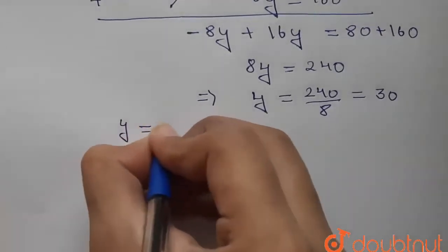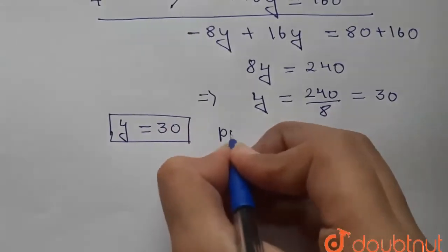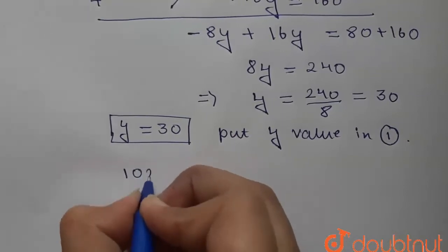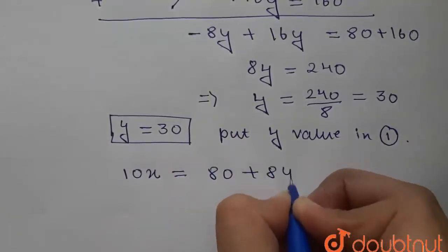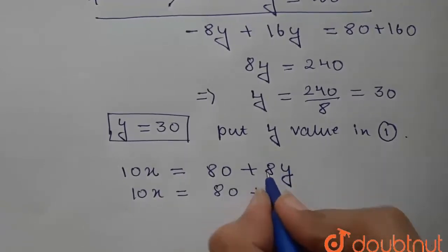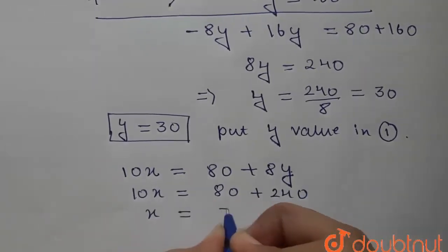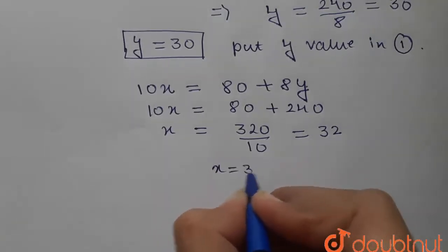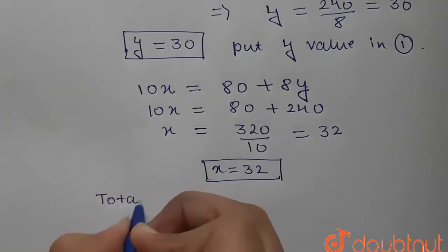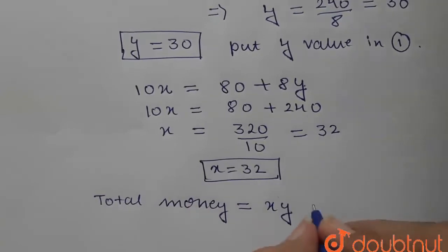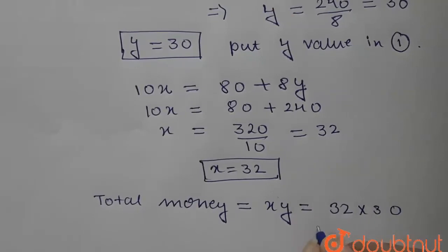Putting y equals 30 into Equation 1: 10x equals 80 plus 8 into 30, which gives 10x equals 80 plus 240 equals 320. So x equals 32. The total money is xy equals 32 into 30, which equals ₹960. This is the required answer.